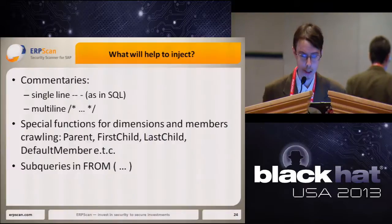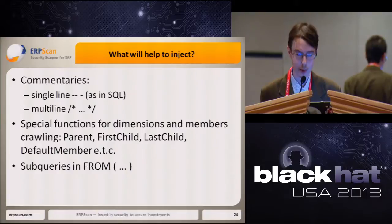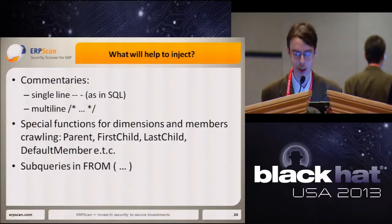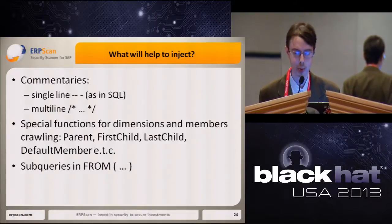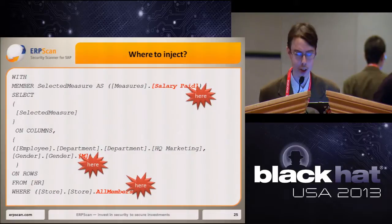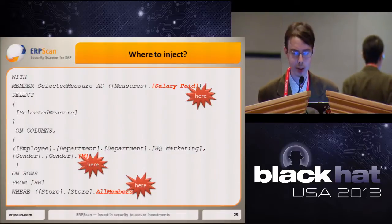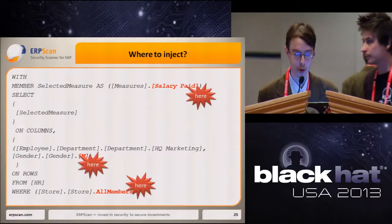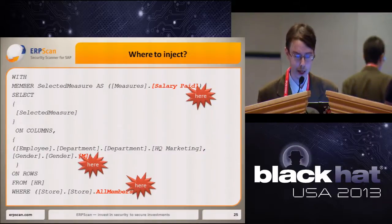Now let's talk about how to inject. What language features will help us in MDX injections? In MDX, like in SQL, there are two types of comments: single-line (dash-dash-space) and multiline (slash-asterisk). We can also use subqueries to create subcubes and expand our attack. There are several built-in functions that work in many MDX dialects — with these we can crawl dimensions and reverse-engineer the cube structure. These functions include Parent, DefaultMember, FirstChild, LastChild, and others. The application can insert user input into three different parts of a query: into the member's definition, into the dimension specification, and into the WHERE filter or slicer.